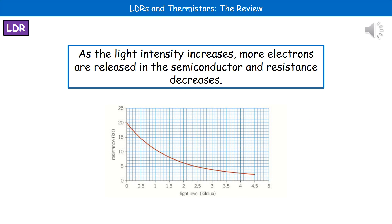The graph shows light level in kilolux on the x-axis and resistance on the y-axis. We get the same curved shape, decreasing as we go further along the light level axis. As the light intensity increases, the resistance decreases. The reason is that as light intensity increases, more electrons are released from the semiconductor's atoms and therefore more current is able to flow because resistance has decreased.